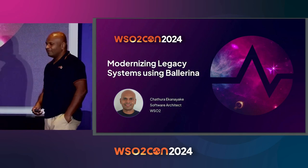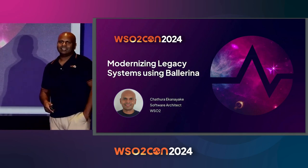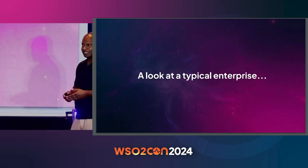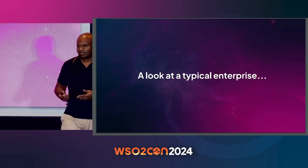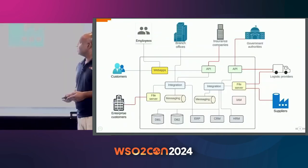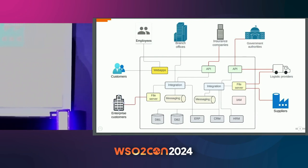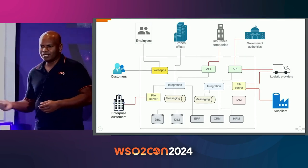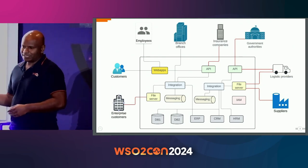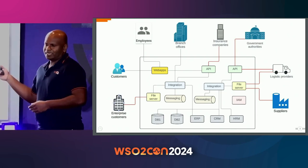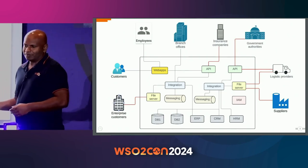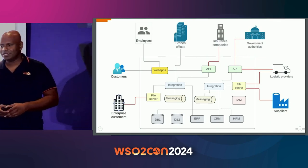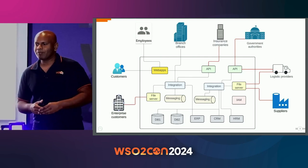Today we are going to look at how we can use Ballerina to modernize existing or legacy systems. First, let's look at how a typical enterprise would look from an IT perspective. This is a very abstract view. At the bottom, we have systems of record — ERP systems, CRM, HRM — and also multiple data sources. These are the systems that hold your data. On top of that, we build our middleware, which includes integrations, messaging systems, and interfacing systems like APIs, file services for file-based transactions, and web apps for interacting with humans.